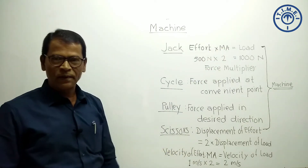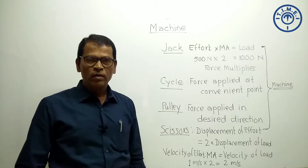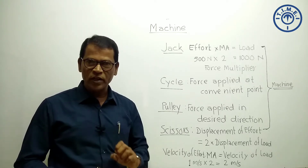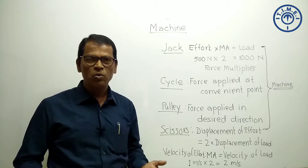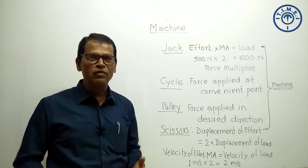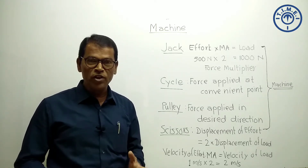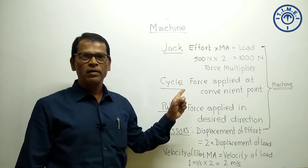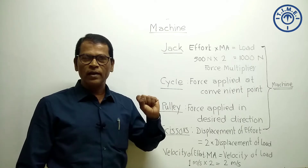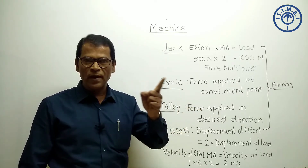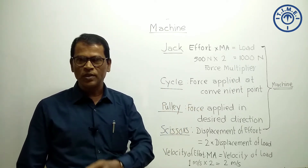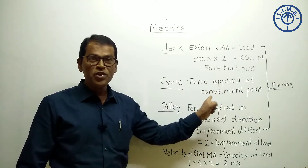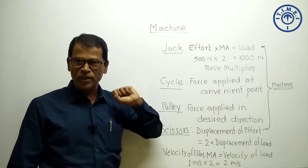Now come to the cycle. Where are you applying the force — to the sprockets or to the wheel? No, it is not possible; it is very inconvenient. The convenient point to apply force to drive the cycle is the pedal. You are applying force on the pedal, and this force is transferred to the wheel. So force is applied at a convenient point, and so the cycle is a machine.